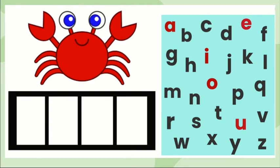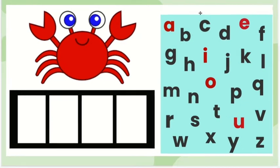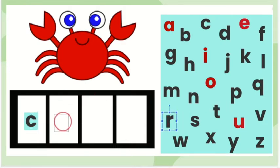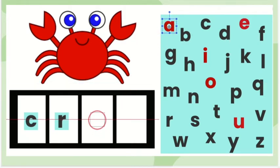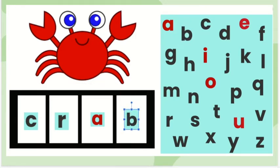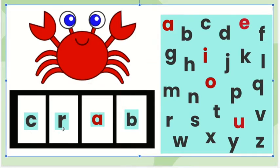Now let's create the word crab with letters that match each sound. The first sound in crab is k, so I will need the letter C. The next sound is r, so I will need the letter R. The next sound is a, so I will need the letter A. The last sound is b, so we will need the letter B. Crab. C, r, a, b. The word crab has four sounds.